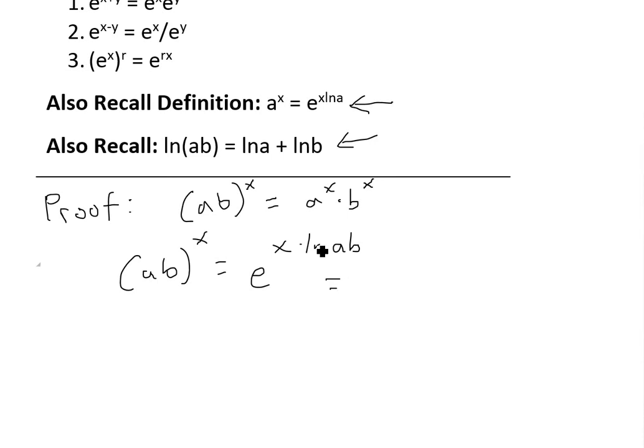Now we can use the logarithmic law right here and separate this out. So this a and b could expand out like that. So we'll have e to the power of x times ln a plus ln b.